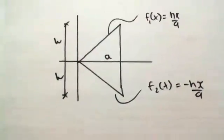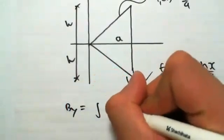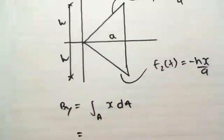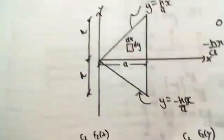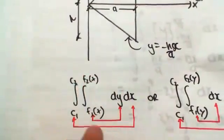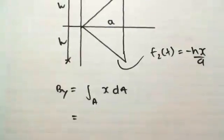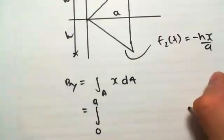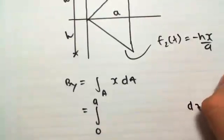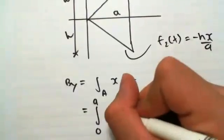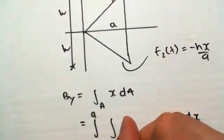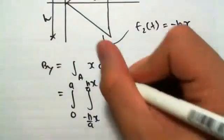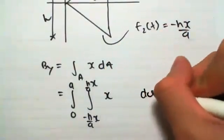We're going to be finding by, which is the integral of x over da over the area. Now, for by, we're still going to be using the exact same integral setup. We're using the exact same thing. So this is going to be the outer integral would be from 0 to a of dx. The inner integral will be from our two functions, minus hx on a to hx on a. We have an x value there, and this is dy.